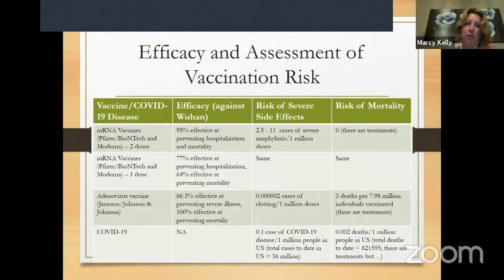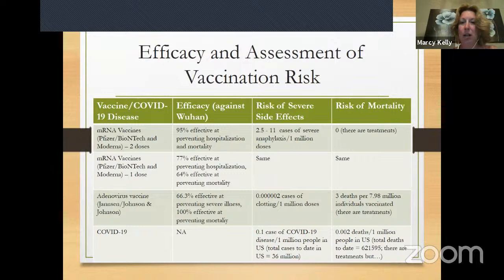The severe side effects for the mRNA vaccines — Pfizer-BioNTech and Moderna — are typically anaphylaxis, a severe allergic reaction, reported at 2.5 to 11 cases of severe anaphylaxis per million doses, with no risk of mortality. For Johnson and Johnson, there's a 0.00002 cases of a severe clotting disorder per million doses, and there have been three deaths reported that are directly linked to the Johnson and Johnson vaccine.